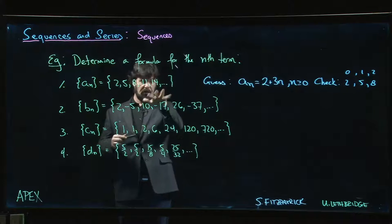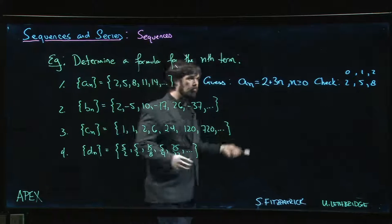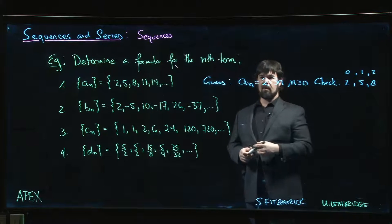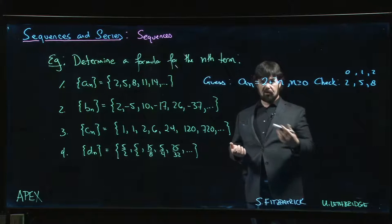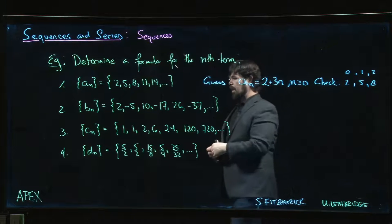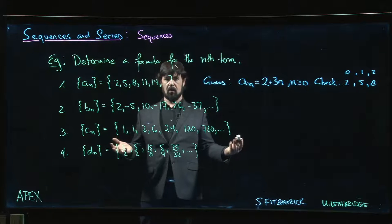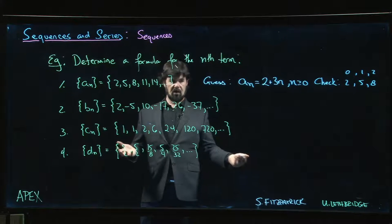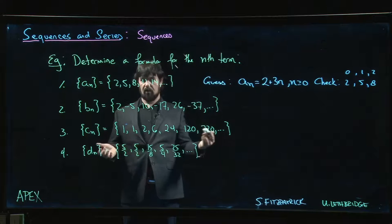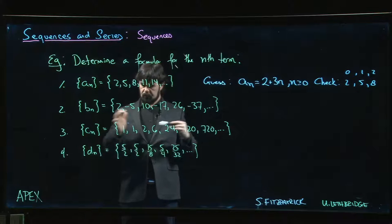There may have been other formulas generating those first five terms, but we've got one that does the job. One reason we want a formula is to study long-term behavior — what can we say about this pattern for large n, and does the sequence have a limit as n goes to infinity? We need a closed formula to study limits.